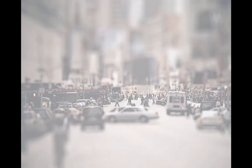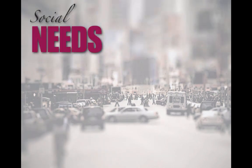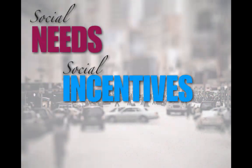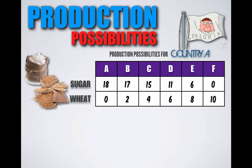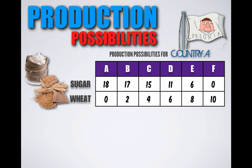Petoria will choose to produce at one of those combinations based on their social needs, social incentives, and social goals. If they want more sugar and less wheat, Petoria will choose to produce at combinations A, B, C, or D. If they want more wheat and less sugar, Petoria will choose to produce at either combination F or E. Using the function provided, we can now determine the opportunity cost of shifting production from one combination to another.